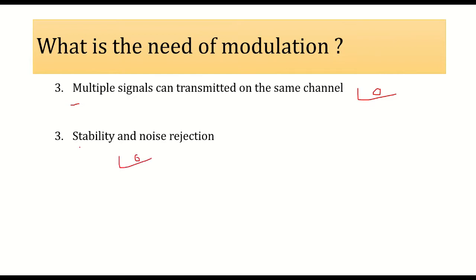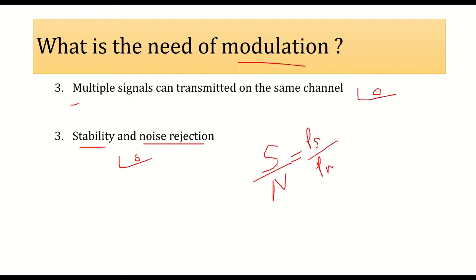Another need is that modulation provides stability and noise rejection. Normally, noise tends to interfere with weakened signals. When you do modulation, your signal becomes strong, which is the major reason for noise rejection. In analog communication, we have a parameter called the signal-to-noise ratio (SNR), given by P_s / P_n, where P_s is signal power and P_n is noise power. For faithful communication, this ratio should be greater than one, meaning signal power must be higher than noise power, resulting in stable and reliable communication.